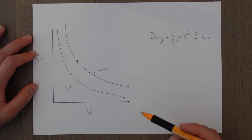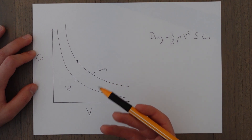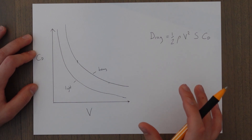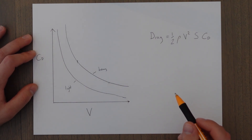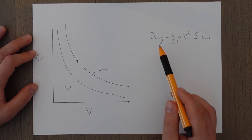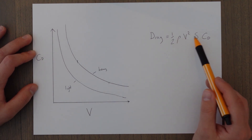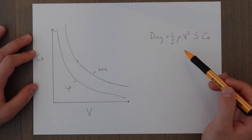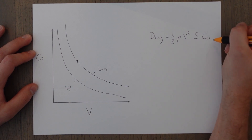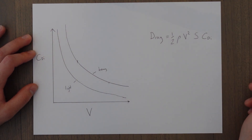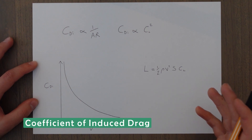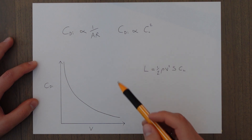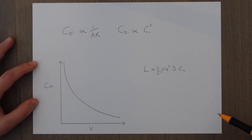Induced drag is the opposite case to parasitic drag and it drops off as speed increases. This does require a bit of further explanation because if you look at the drag equation it appears that it varies by V squared — the same as parasitic drag. Why is it inverted? To dive a bit deeper into the coefficient of induced drag, we'll talk about the relationships between it, the aspect ratio, and the coefficient of lift.